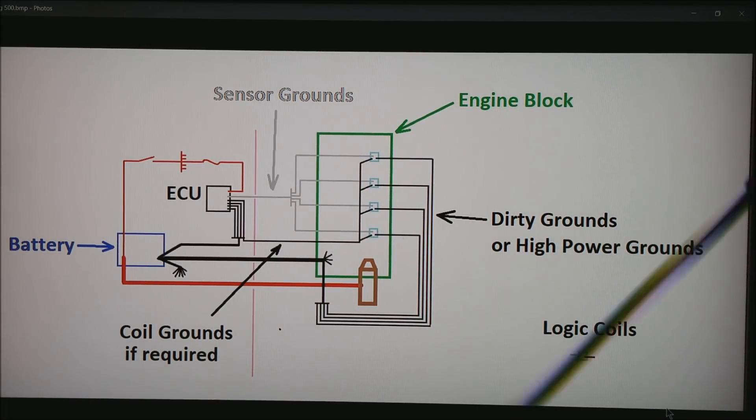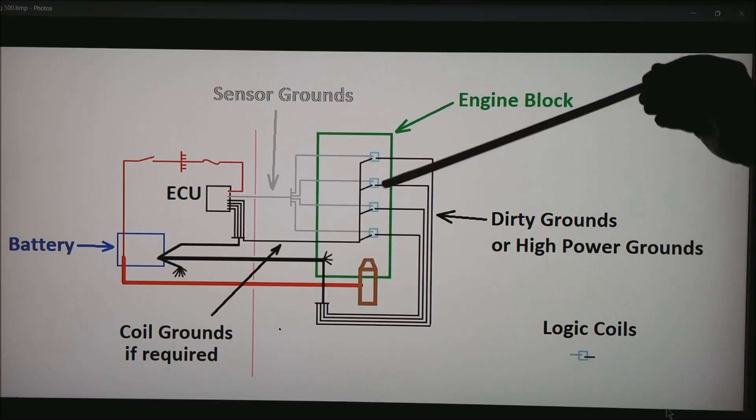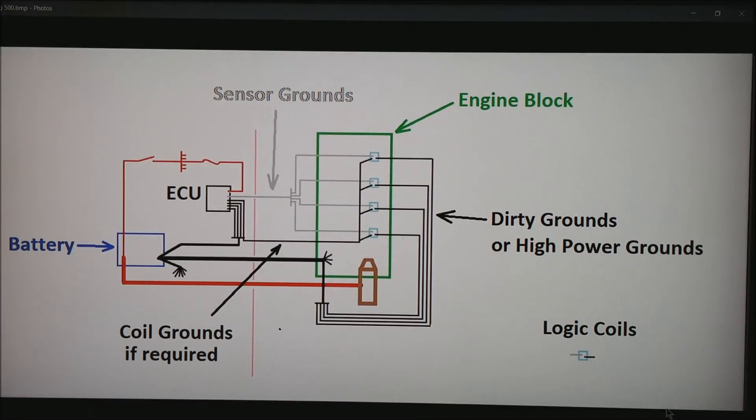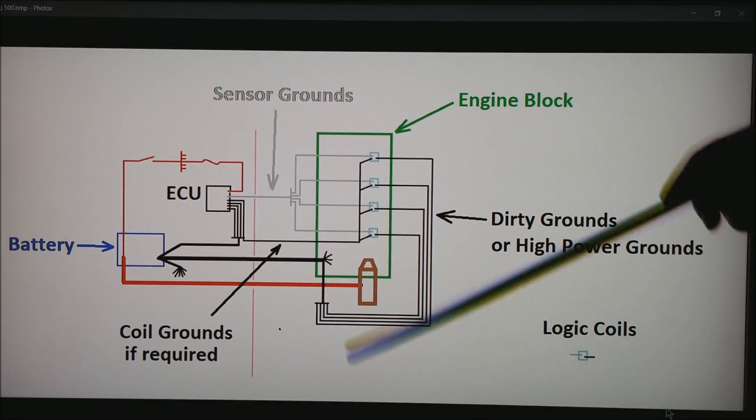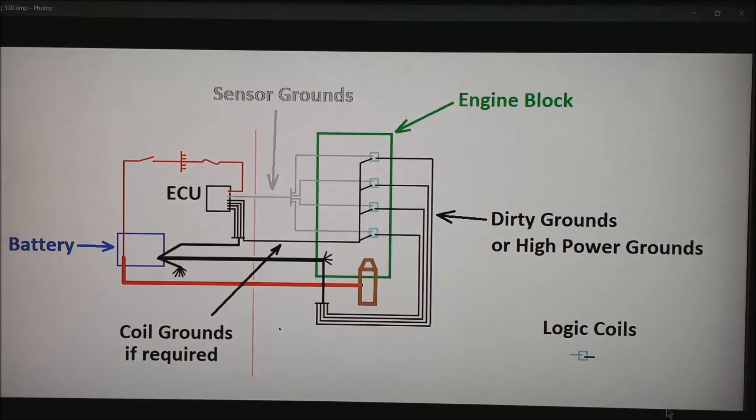One thing to keep in mind is you might have 8 coils on a V8 motor. These can have some fairly serious power requirements getting back to the battery. So you could possibly bring it back to the block that you have backed by the ECU or possibly return them all the way back to the battery.